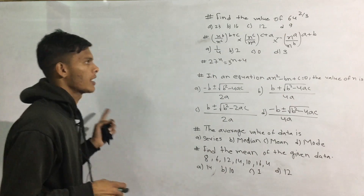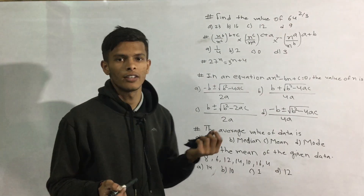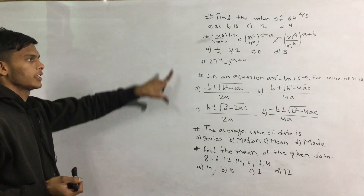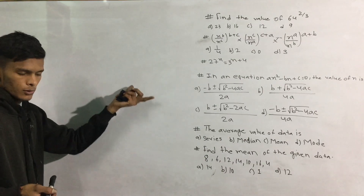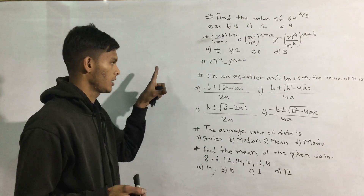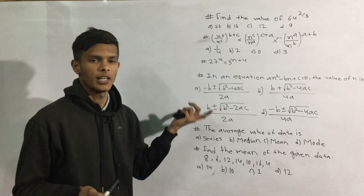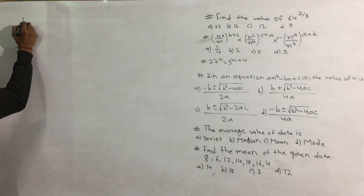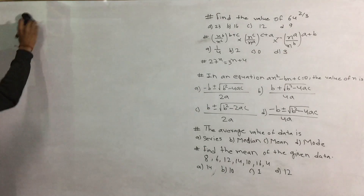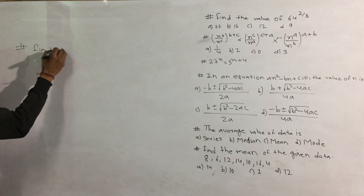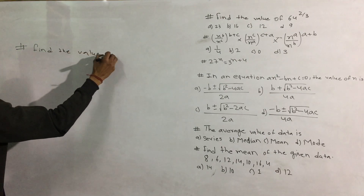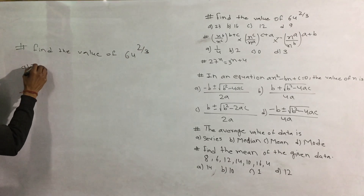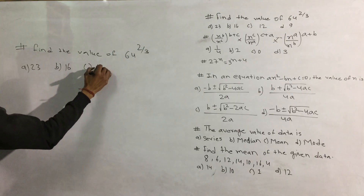We are doing a CET1. Find the value of 64 to the power of 2/3, and option A is 23, option B is 16, option C is 22.